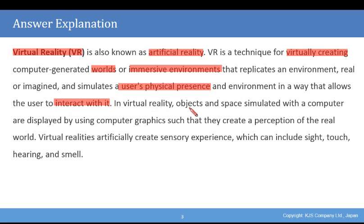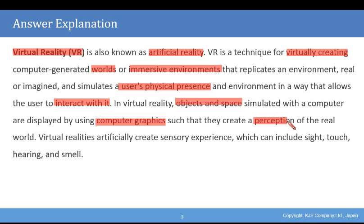In VR, objects and space simulated with a computer are displayed by computer graphics, such that they create a perception of the real world. Virtual reality artificially creates sensory experience, which can include sight, touch, hearing, and smell.